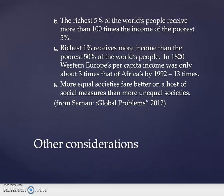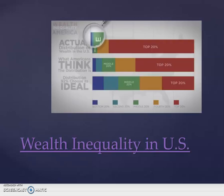Some other considerations: the richest 5% of the world's people receive more than 100 times the income of the poorest 5%. The richest 1% receive more income than the poorest 50% of the world's people. In 1820, Western Europe's per capita income was only about three times that of Africa's; by 1992 it was 13 times. As Cereno notes in 'Global Problems,' more equal societies fare better on a host of social measures than more unequal societies, as we certainly see with the UN's development index.